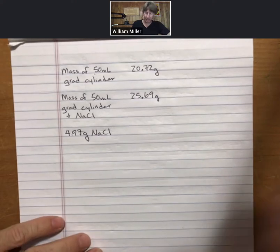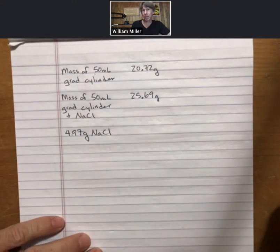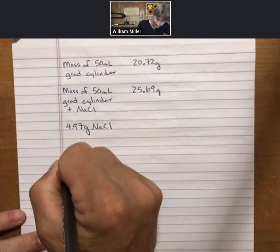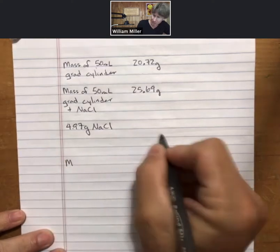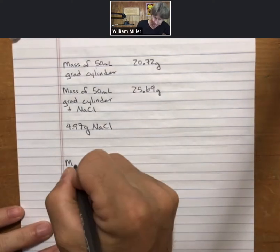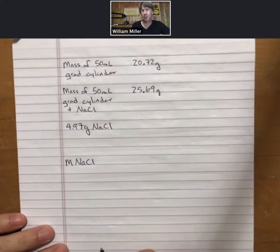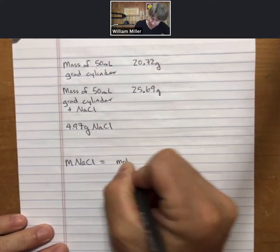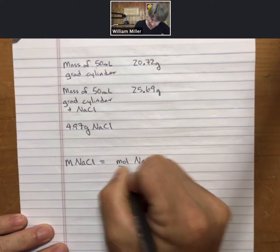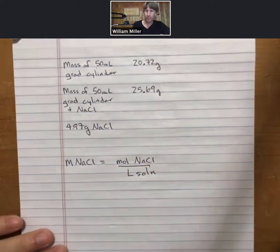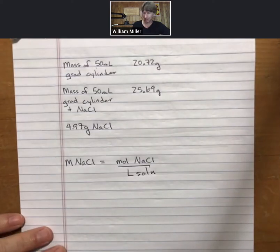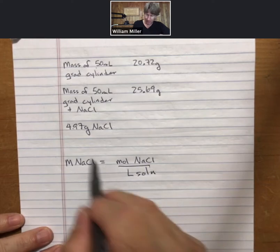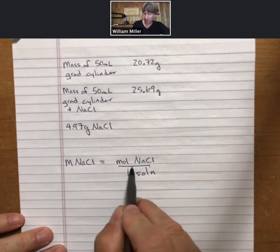Now molarity is going to be moles of solute, moles of sodium chloride, over liters of solution. I'm going to write that down here and I'm going to leave some room up here because I'll do some work in a minute. So molarity of sodium chloride equals moles of sodium chloride divided by liters of solution.